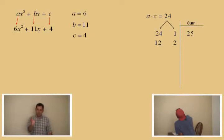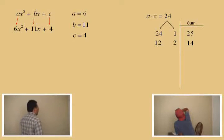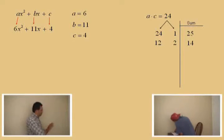And it makes sense because 12 times 2 is 24. Okay, Charlie, what do those sum to? 14. 14, right? Okay, is 14 our middle term? No. No, it's not. If our middle term was a 14x, then we would use those two factors to rewrite that middle term. But we're looking for a sum of 11. So, let's go on again.